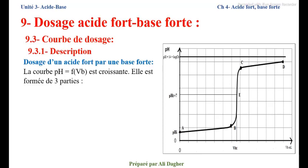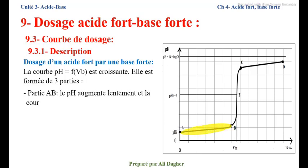Elle est formée de trois parties. Partie A-B : le pH augmente lentement et la courbe forme un palier — une ligne droite.